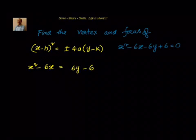Now we want to complete the square here so that we can write it in the form of (a-b)². So in the next step I will write down x² - 6x + 9 = 6y - 6 + 9. That is (x-3)².